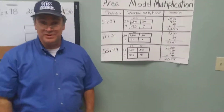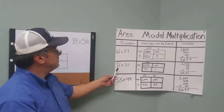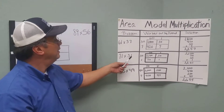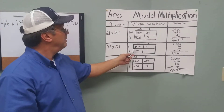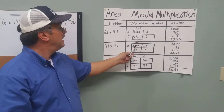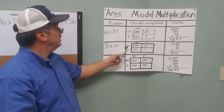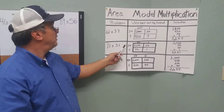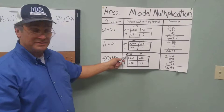See how simple that was? Let's do another one. Starting with 71 times 31. We take 71, place it on top: 70 in the tens spot and then the 1 over in the ones spot. On the left-hand side, we place 31: 30 in the tens spot and the 1 in the ones place.